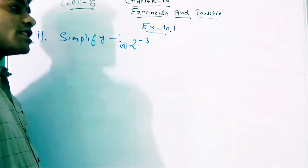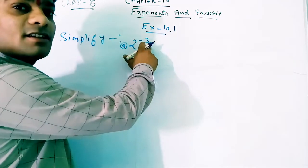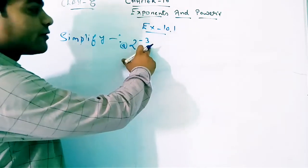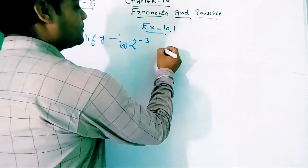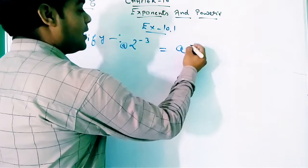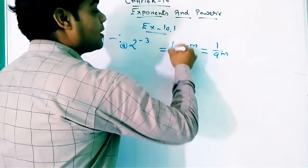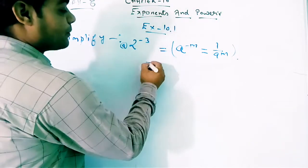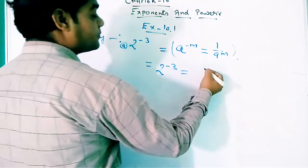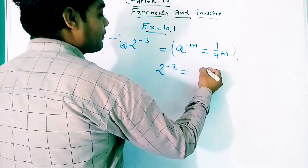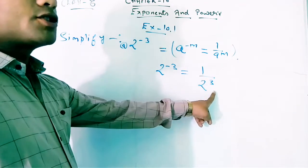We have to use the laws to solve this. The base is 2, the power is minus 3 — a negative power. So first, to make the power positive, we use the last law: a raised to the power minus m gives 1 upon a^m. So 2^(-3) becomes 1 upon 2 raised to the power 3.